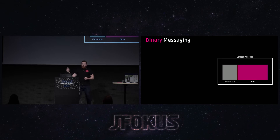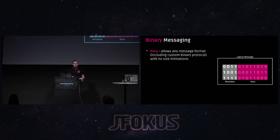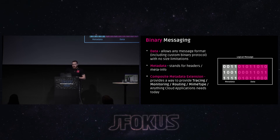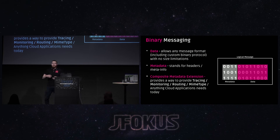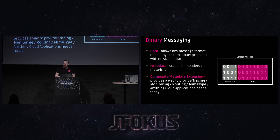The protocol provides everything: not only binary data sending but headers and data in a single payload. In the data field you can encode anything — any size payload or JSON. And you can encode metadata as well. Moreover, there is something called composite metadata, which lets you define predictable encodable and decodable things, but also allows you to define routing or MIME type for your payload, so the responder can figure out exactly what that payload is.